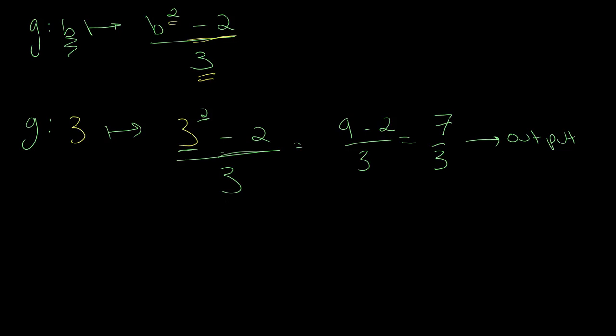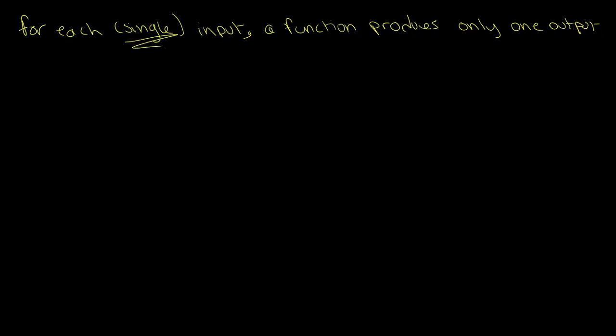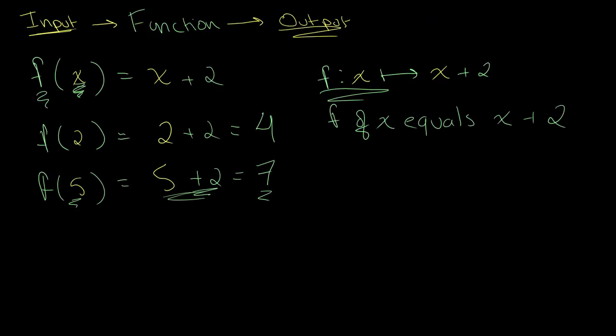So, one of the most important rules surrounding functions is that, for each single input, a function produces only one output. That is, for each one number you put in, your function should only give you one answer. And that's proven true for all of our other examples. For example, if we look here, we entered 2 as our input and got 4, only one number as our output. Here we entered 5 as our input and we got only one number, 7 as our output.